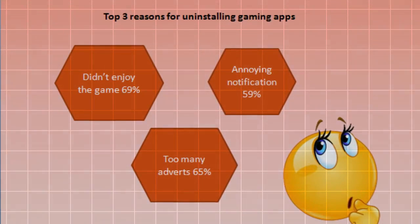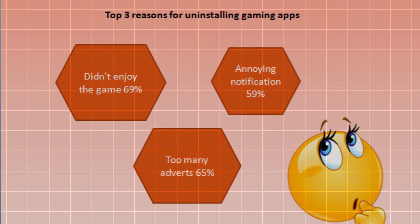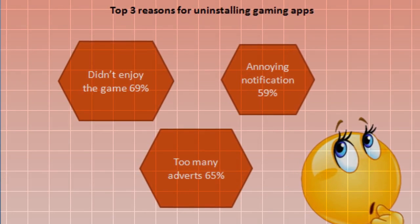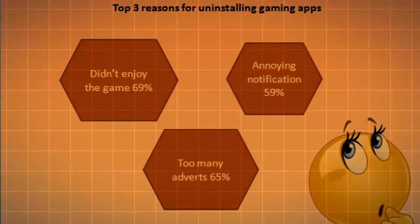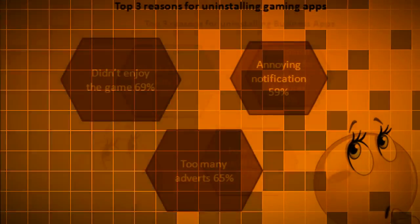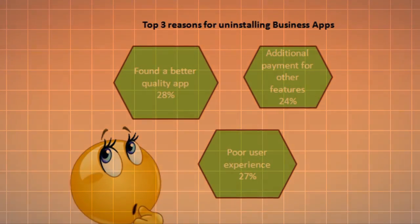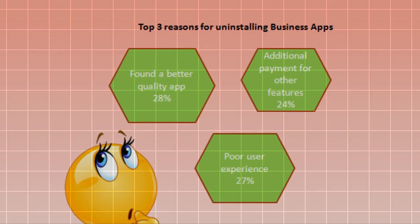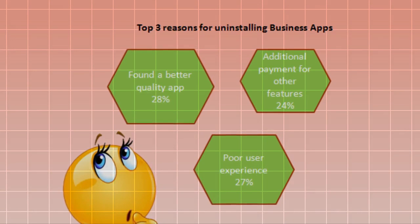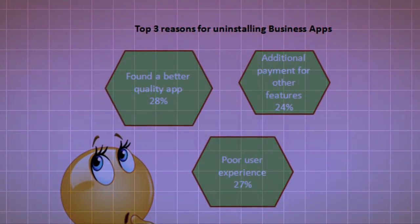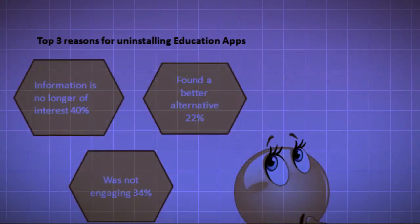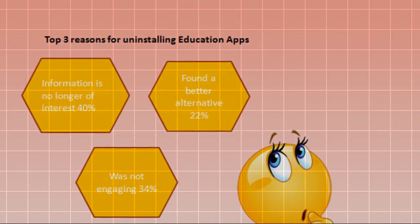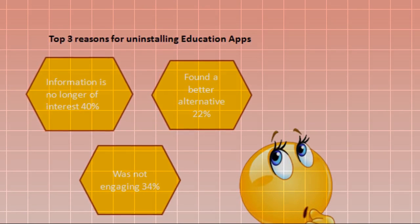Top 3 reasons for uninstalling gaming apps: didn't enjoy the game 69%, annoying notifications 59%, too many adverts 65%. Top 3 reasons for uninstalling business apps: found a better quality app 28%, additional payment for other features 24%, poor user experience 27%. Top 3 reasons for uninstalling education apps: information is no longer of interest 40%, found a better alternative 22%, was not engaging 34%.